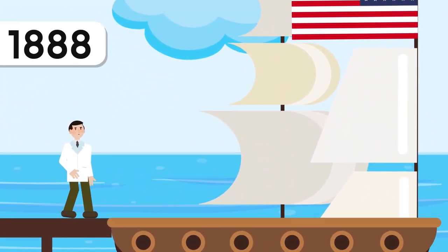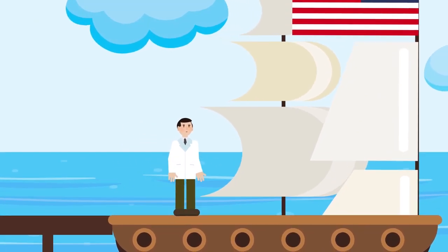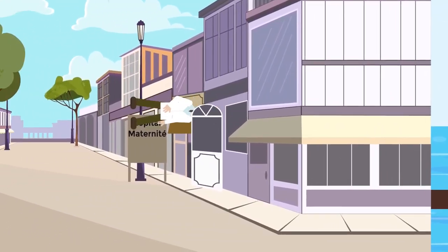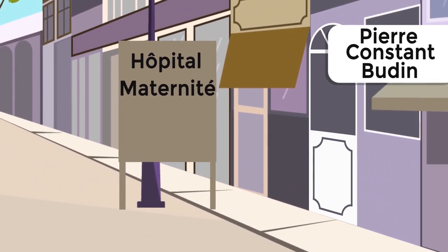Some sources claim that Cooney emigrated to the United States in 1988 at the age of 19. But the more popular version of the story is that at the end of the 19th century, he was an apprentice of the famous French obstetrician, Pierre Constant Boudin.